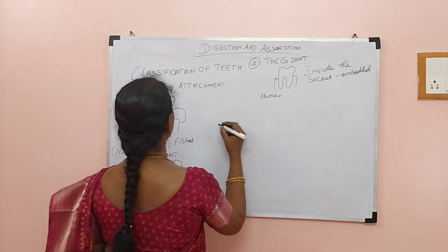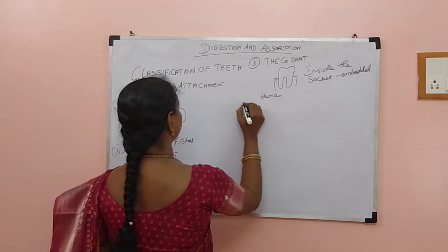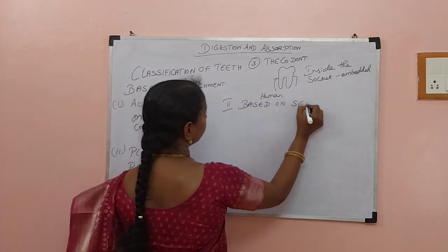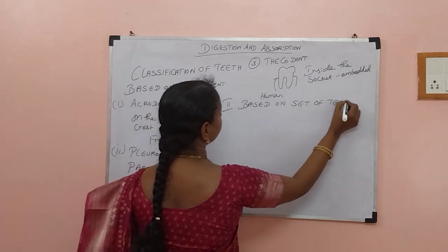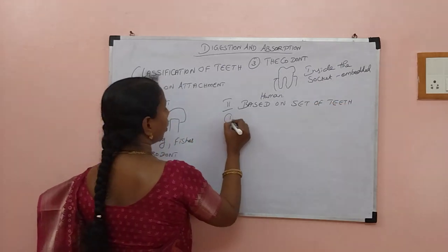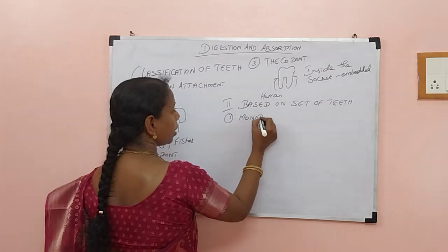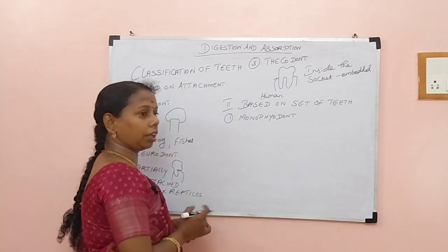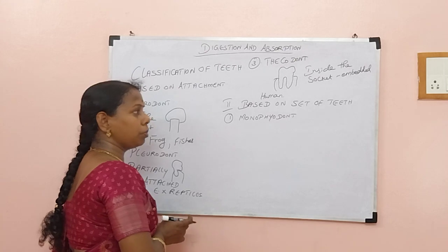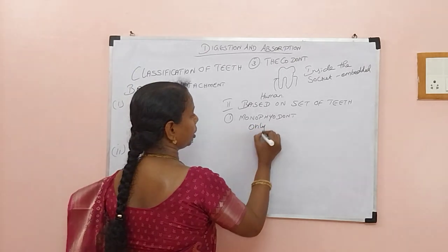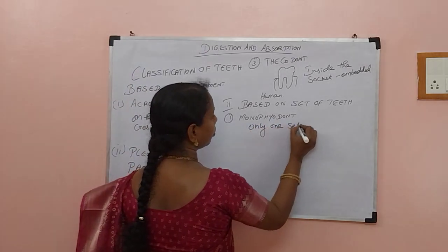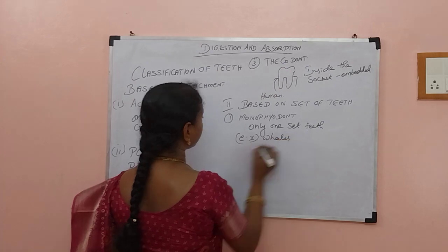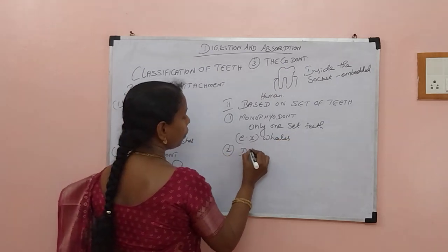Now we are going to classify based on the set of teeth. So monophyodont — these organisms will have only one set of teeth throughout their life. They won't get a replacement; if it falls, succession is not possible. So only one set of teeth. Example: whales. The second one is diphyodont, where they have two sets of teeth.